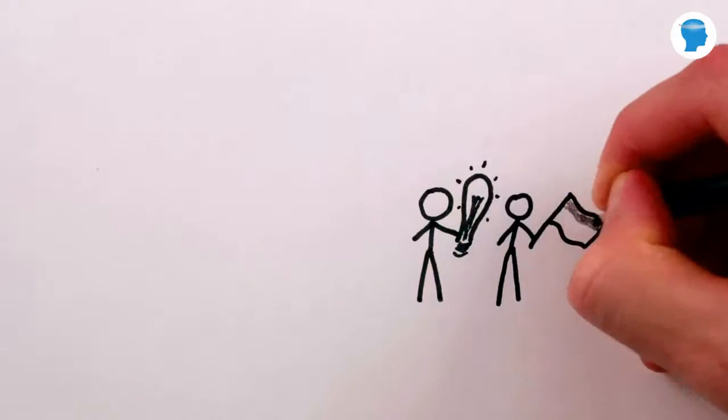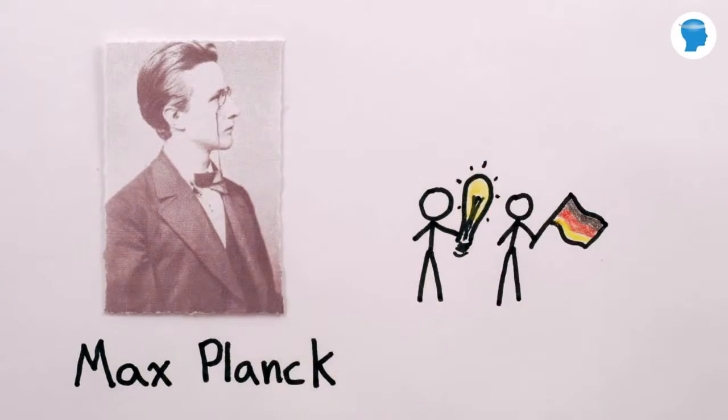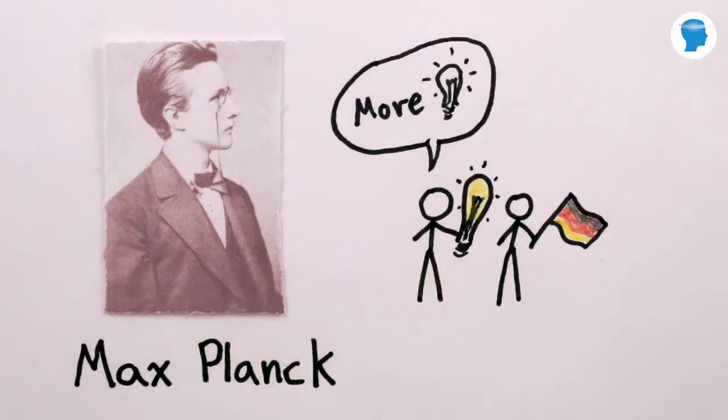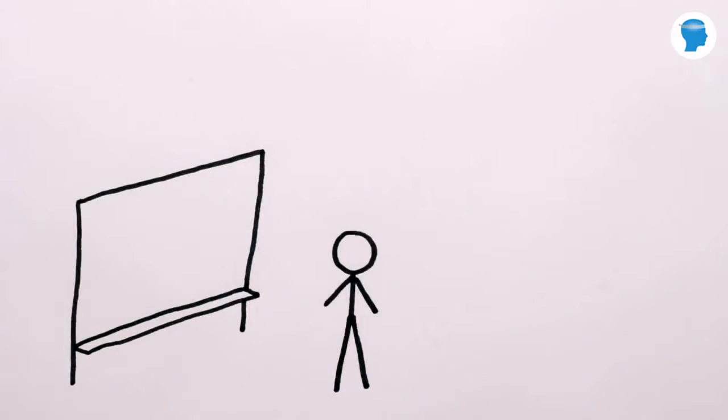In the early 1890s, the German Bureau of Standards asked Max Planck how to make light bulbs more efficient so that they would give out the maximum light for the least electrical power.